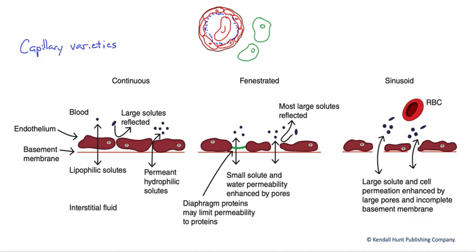Here we will look at capillary varieties and how their anatomical structure affects their permeability. Capillaries are the smallest vessels across which exchange of nutrients, gases, and electrolytes occur with the tissues. We have a capillary shown in cross-section with a red blood cell suspended in the plasma inside. We're going to look at several different varieties of structure.